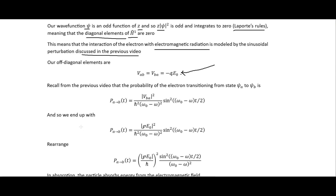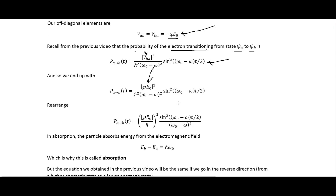Recall from the previous video that the probability of the electron transitioning from state a to state b is given by our earlier formula. When we make the replacement of V sub ba with our current expression, we do some rearranging to end up with it in a form where we have the polarization matrix element squared in parentheses.